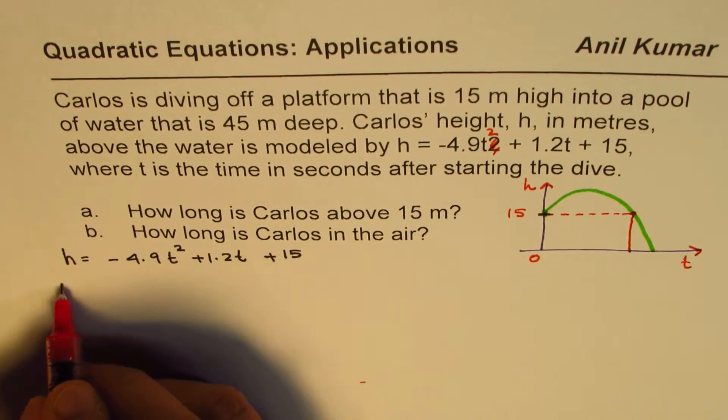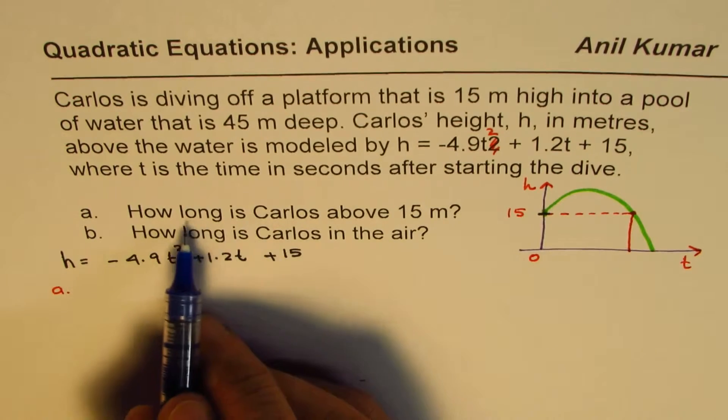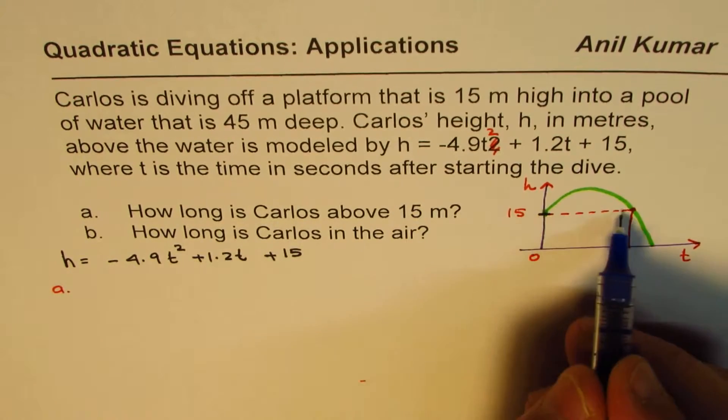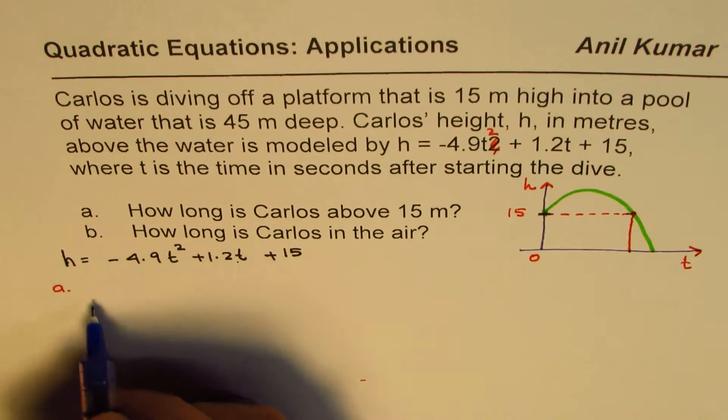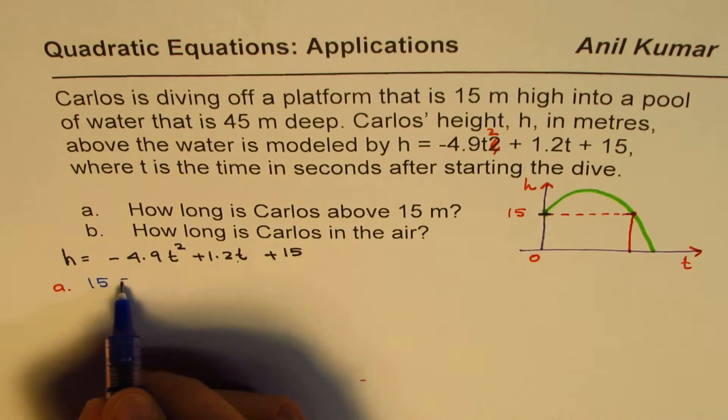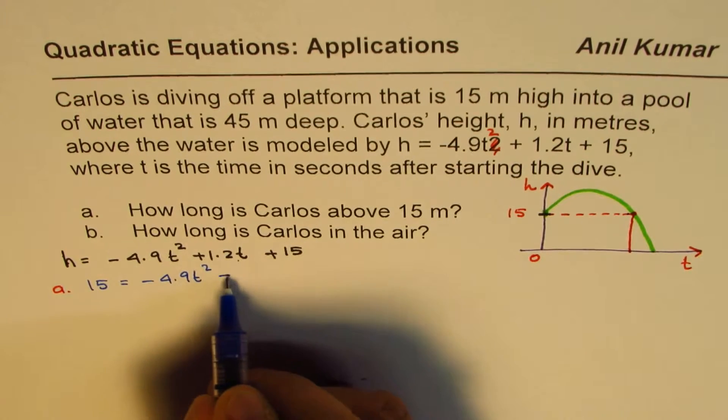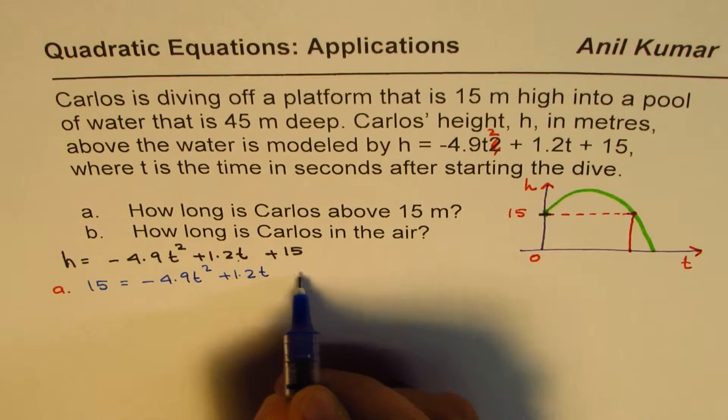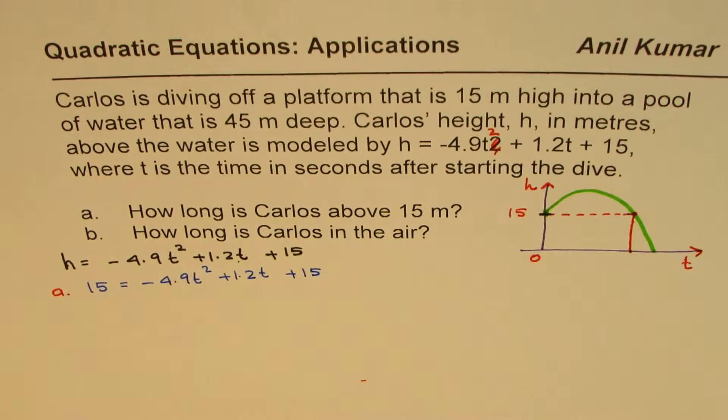For doing part A, what you need to do is solve the equation when height is 15. You have to find the value of t. So we can write, replace h with 15. We get 15 equals minus 4.9t squared plus 1.2t plus 15. That becomes the solution for part A.